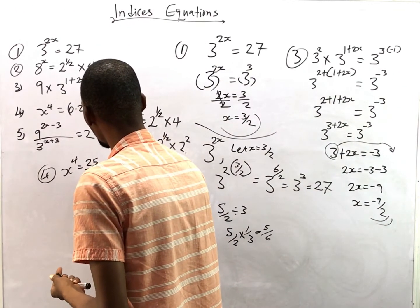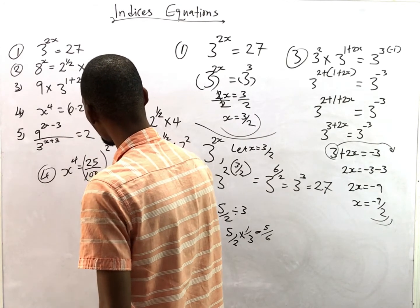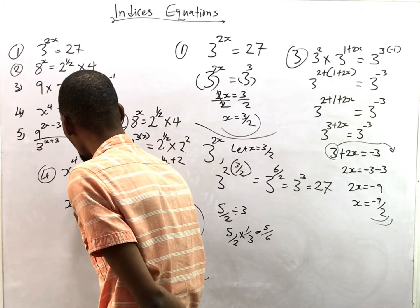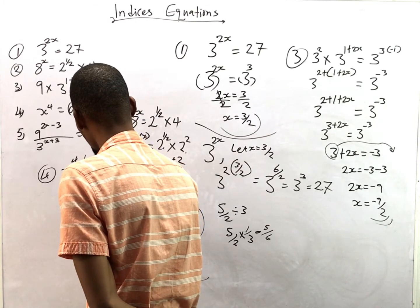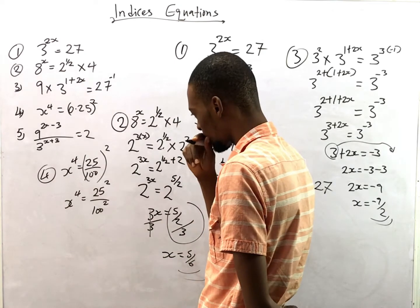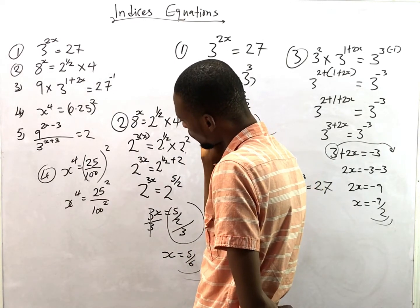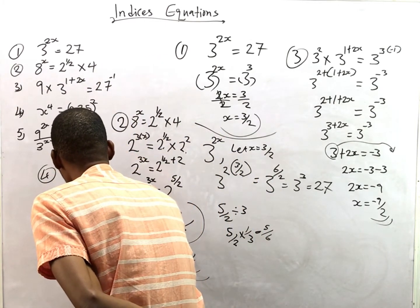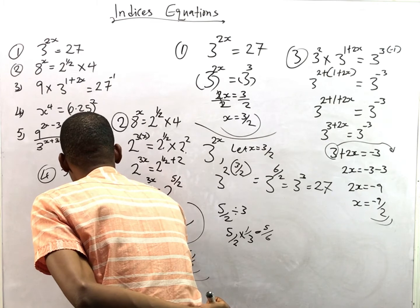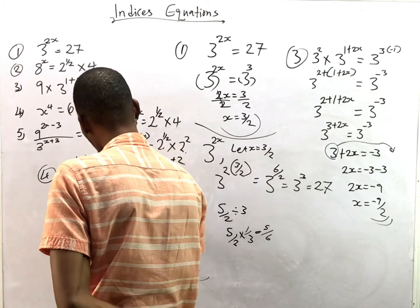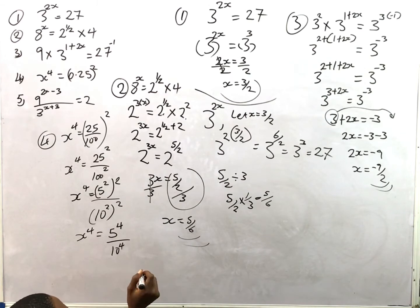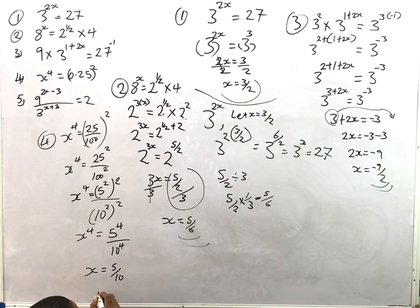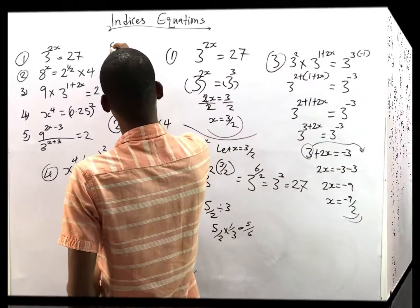Question four: (25/100)^s squared = something raised to the power of four. We break this down — 25 = 5^2 and 100 = 10^2, so we have (5^2 / 10^2)^s with power 4. The powers cancel and we get s = 5/10 = 1/2, which equals 0.5.